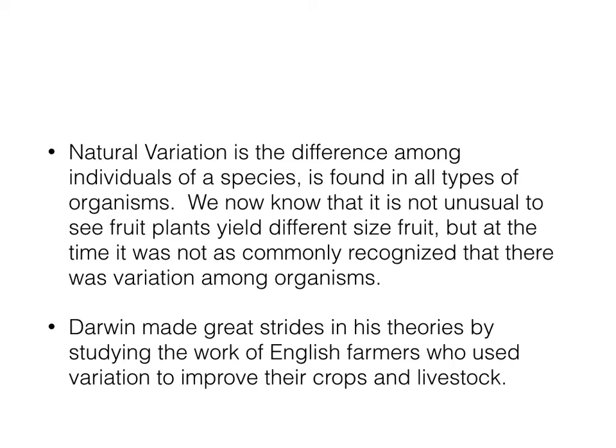Natural variation is an important thing that Darwin noticed. Natural variation is the difference among individuals of a species, and it's found in all types of organisms. We know now that it's not unusual to see plants yield different sized fruit, but at the time it was not as commonly recognized. We see different sized tomatoes, different sized cows, cows that produce more milk or less milk. All these variations are naturally occurring. Darwin made great strides in his theories by studying the work of English farmers, who used this variation to improve their crops and livestock.